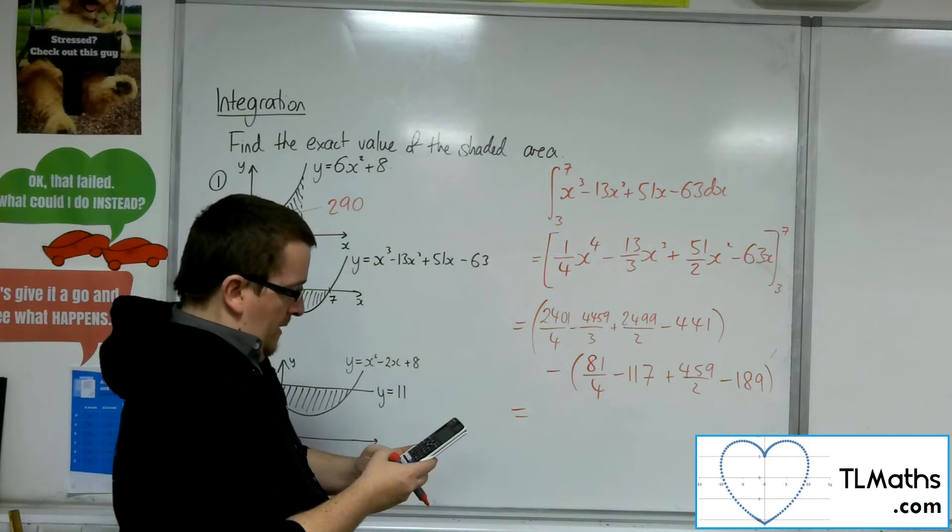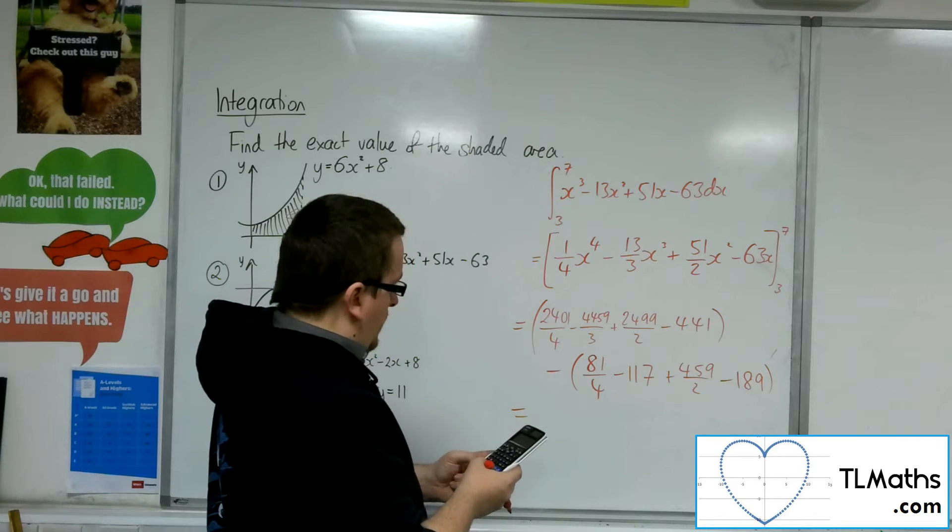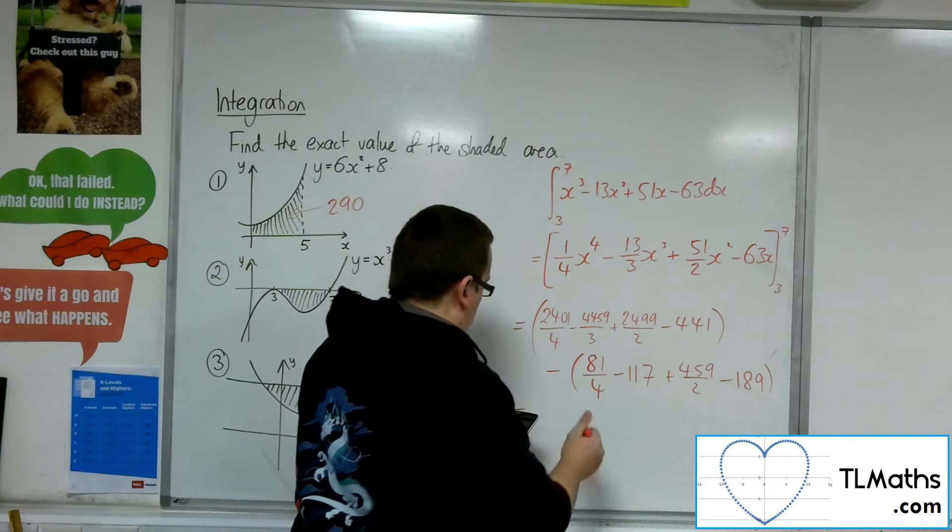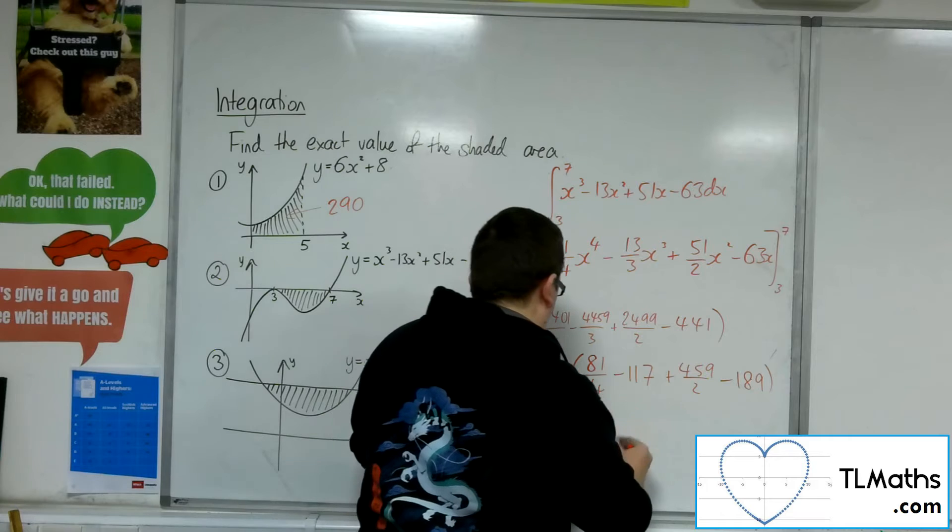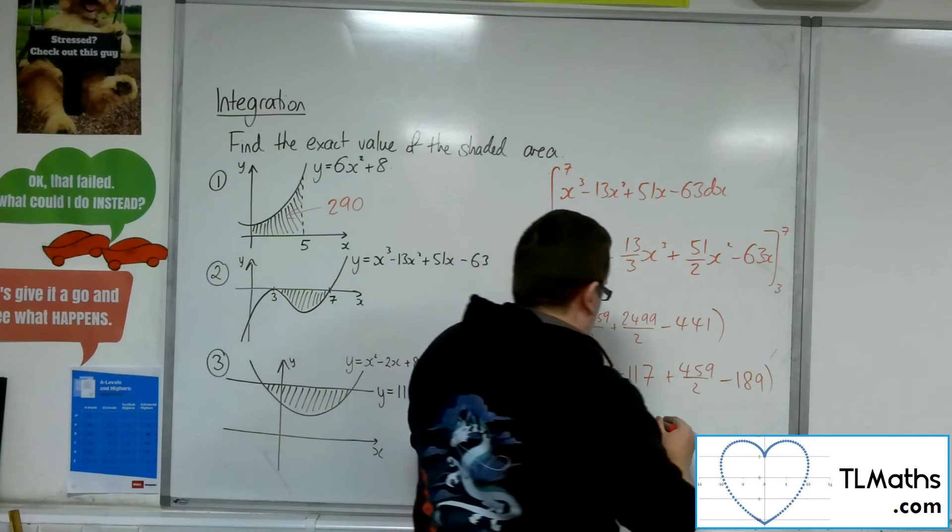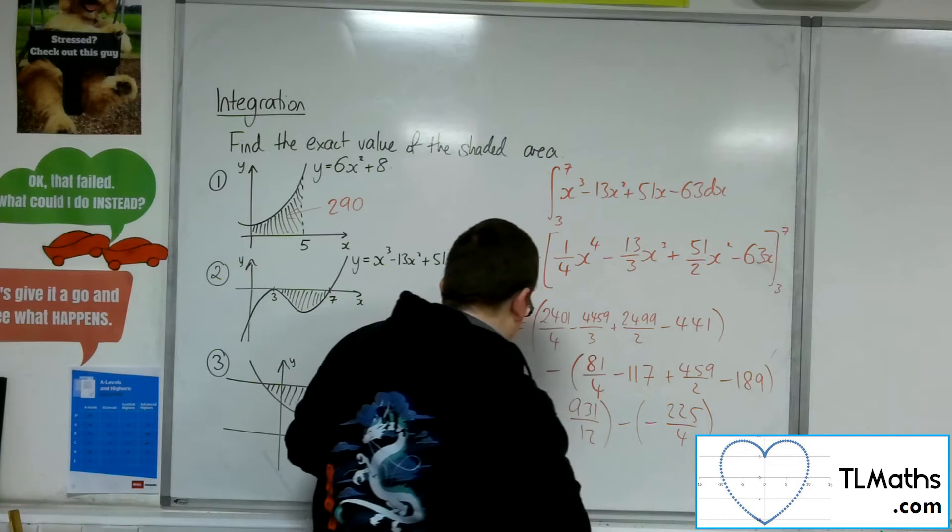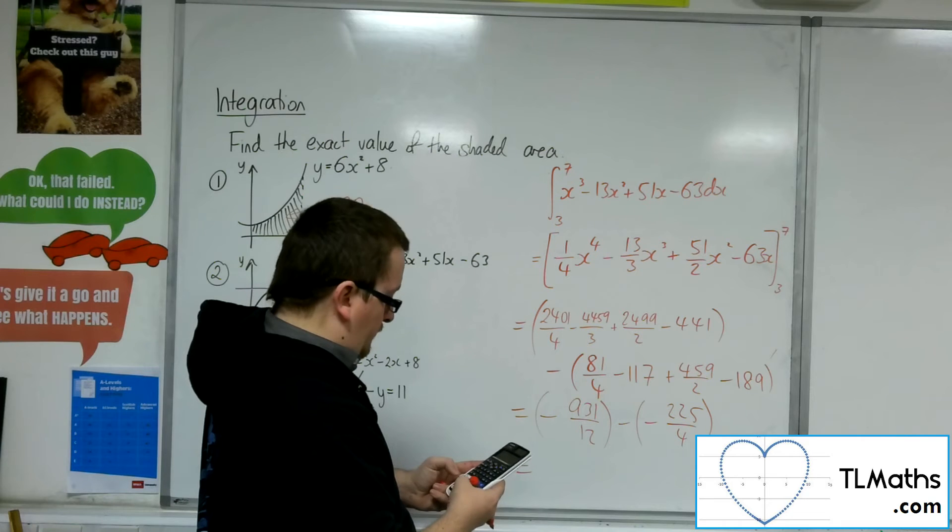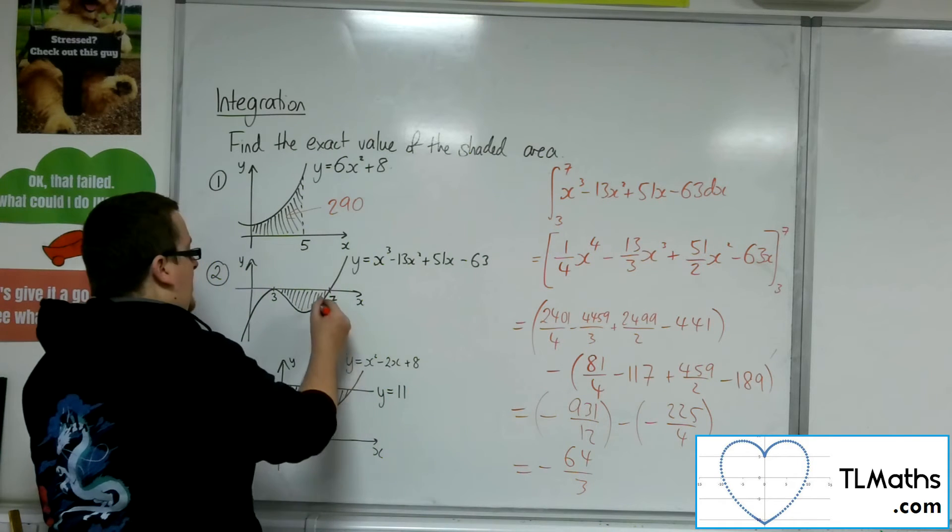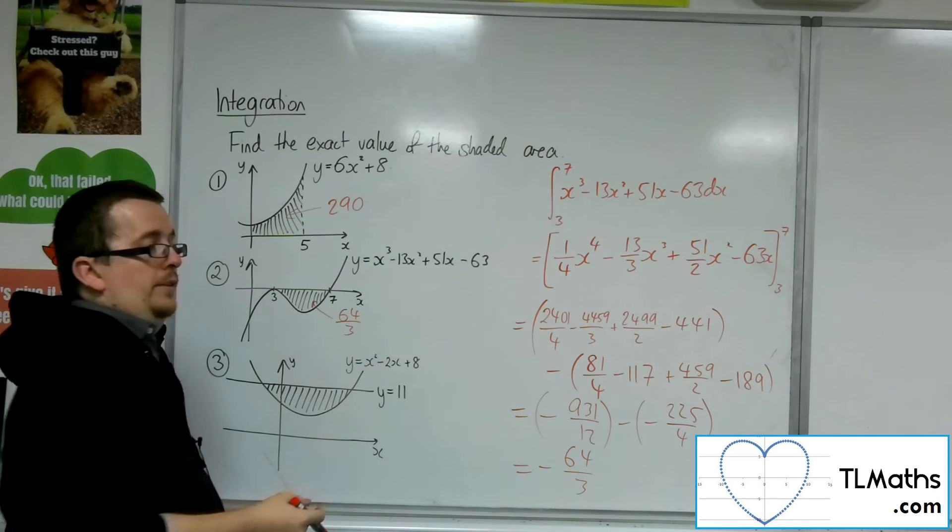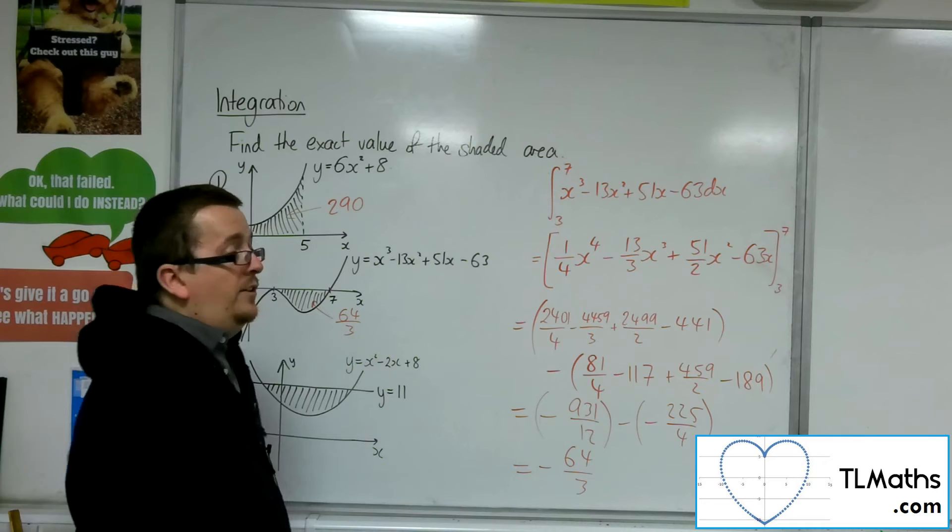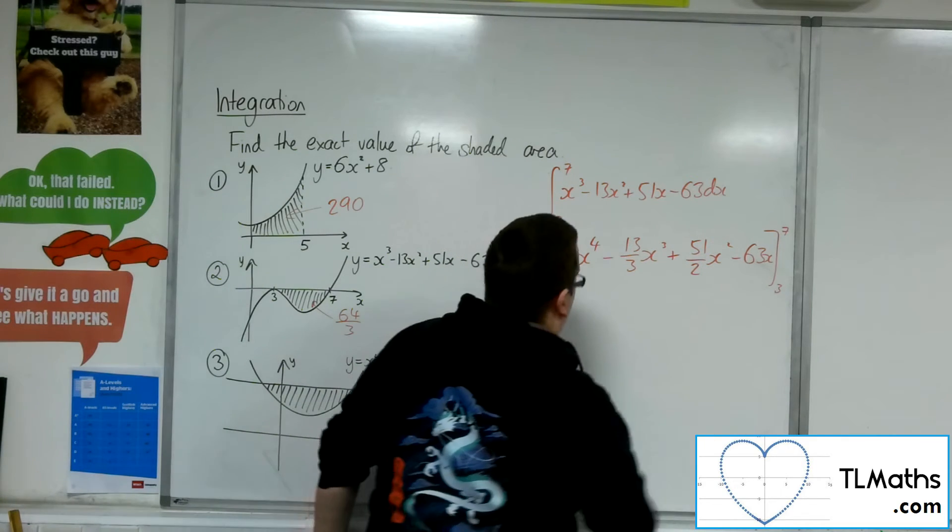Right, so in the first bracket, we have minus 931 over 12. In the second bracket, we get minus 225 over 4. So, in total, we get minus 64 thirds. So, the exact area is positive 64 thirds. So that one's a little bit messy, but remember, you can do all the bits that you need to do in the calculator.